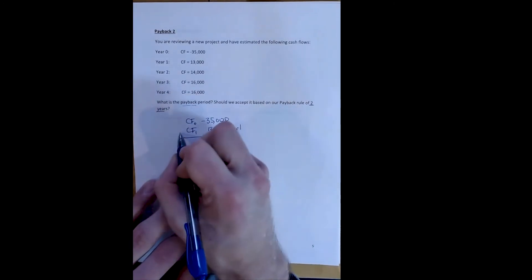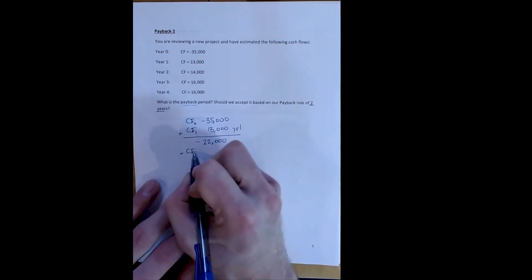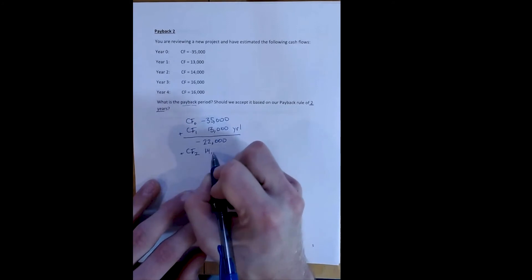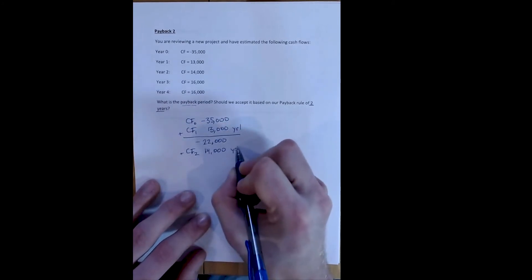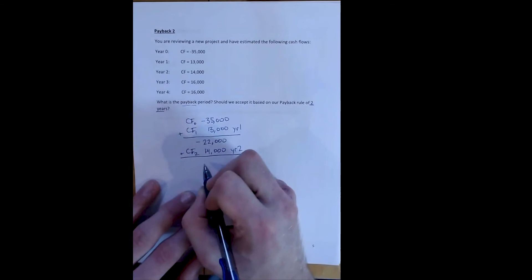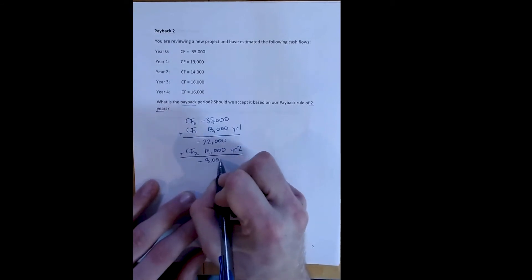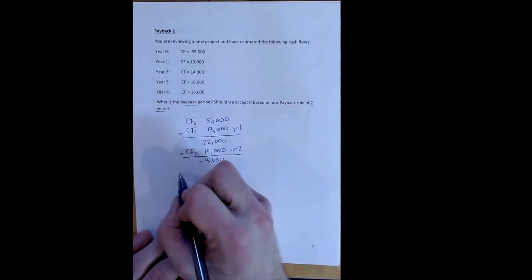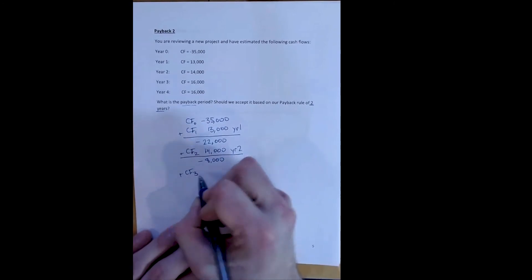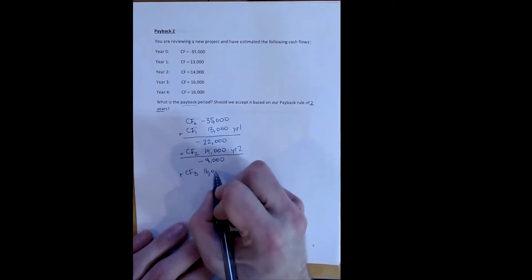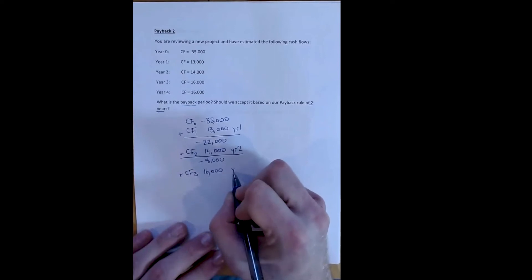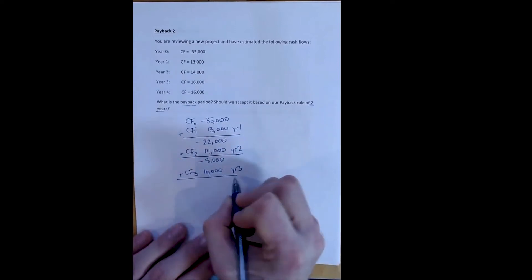So we add our second year's cash flow, which is $14,000. And that's not going to do it either. We're still going to have $8,000 left to recover. So we add our third year's cash flow, which is $16,000. And that's going to do it.